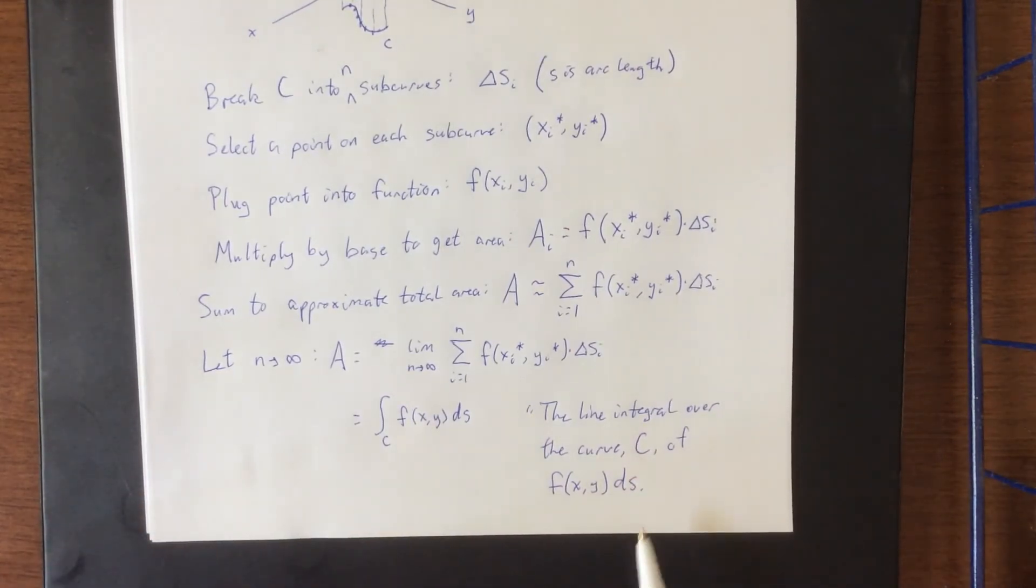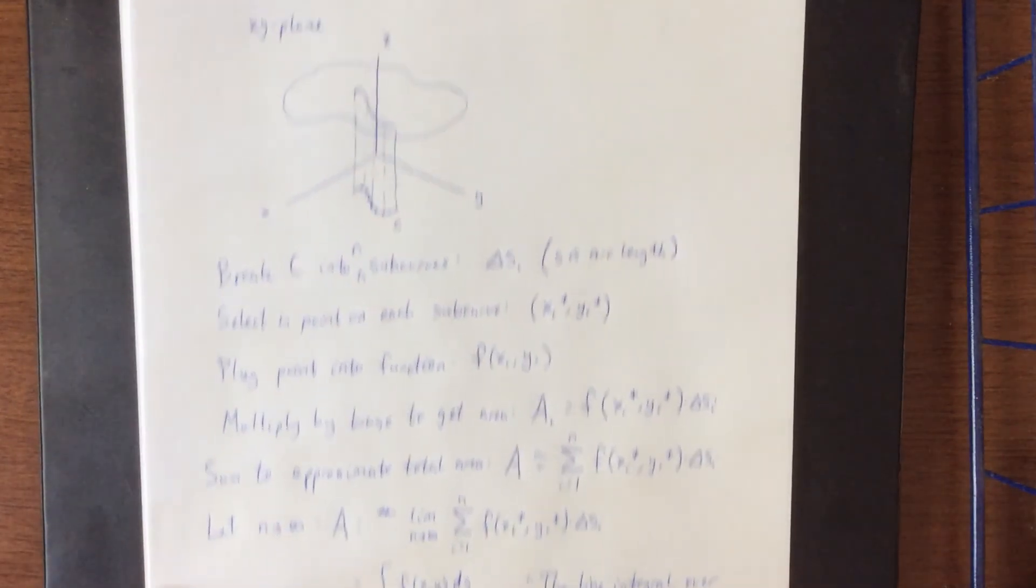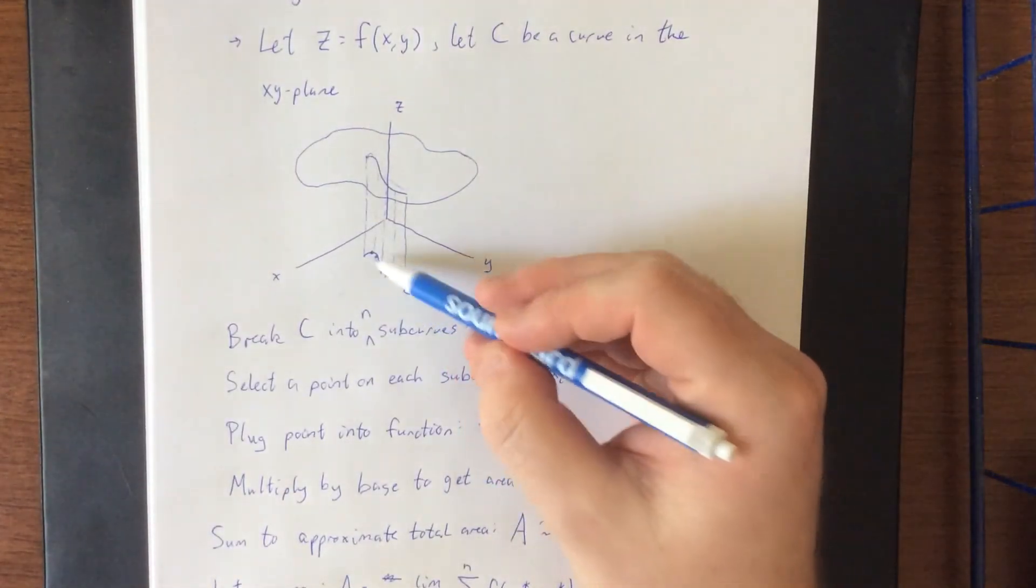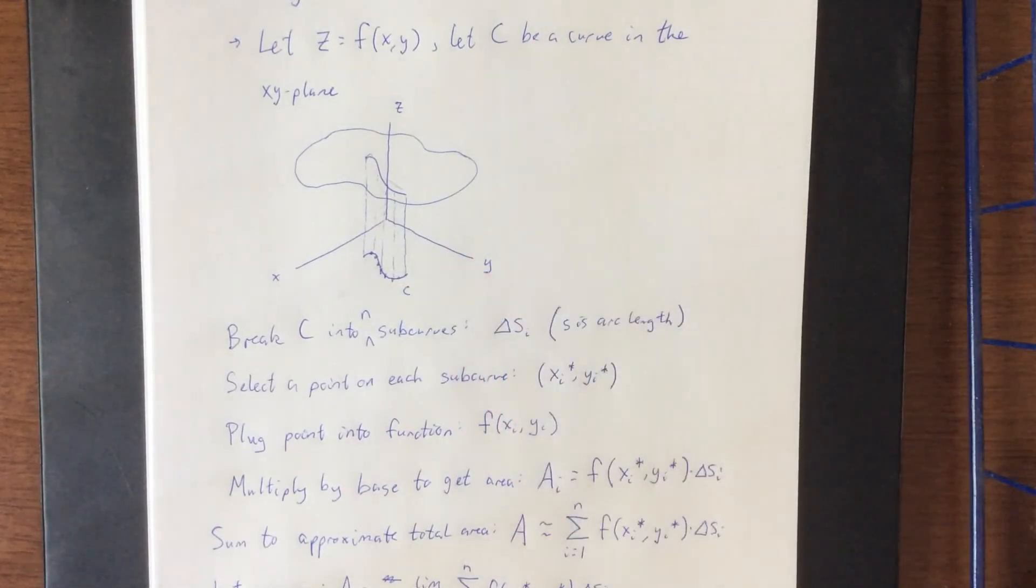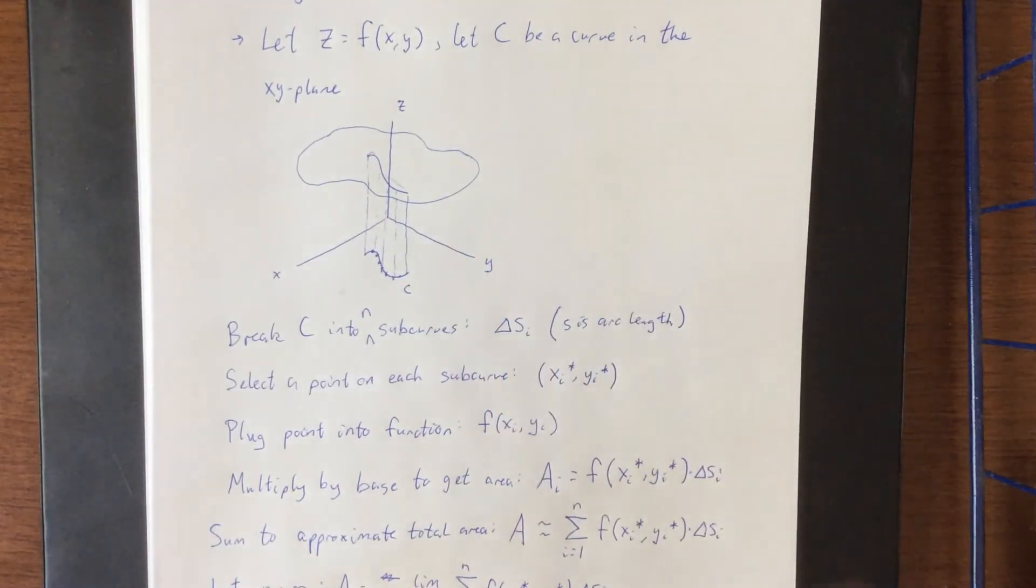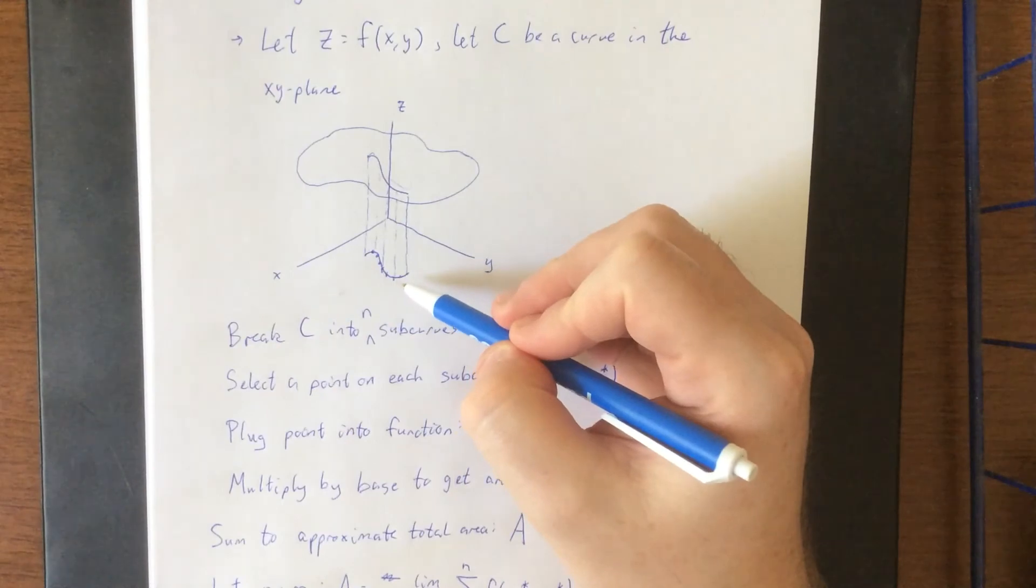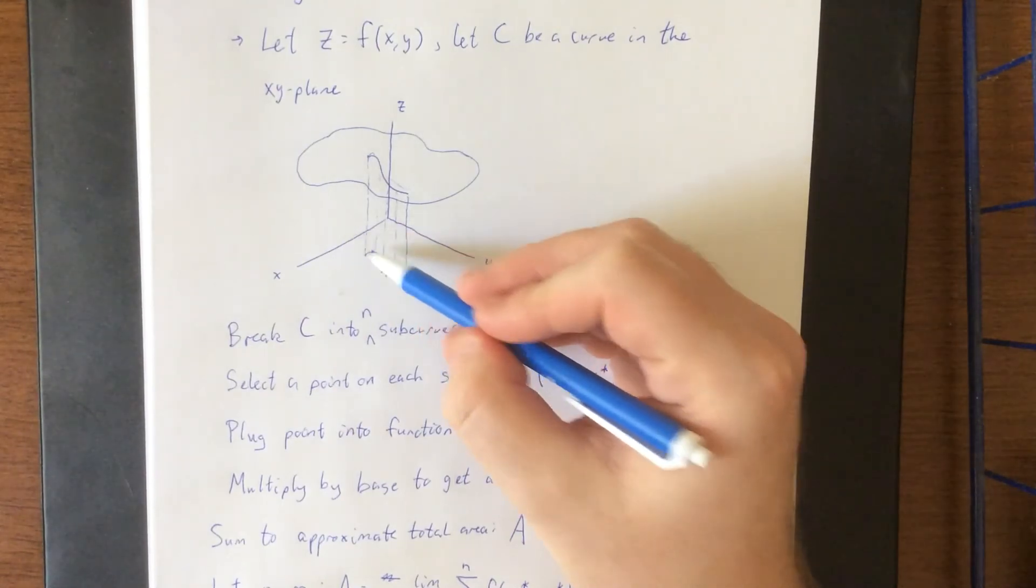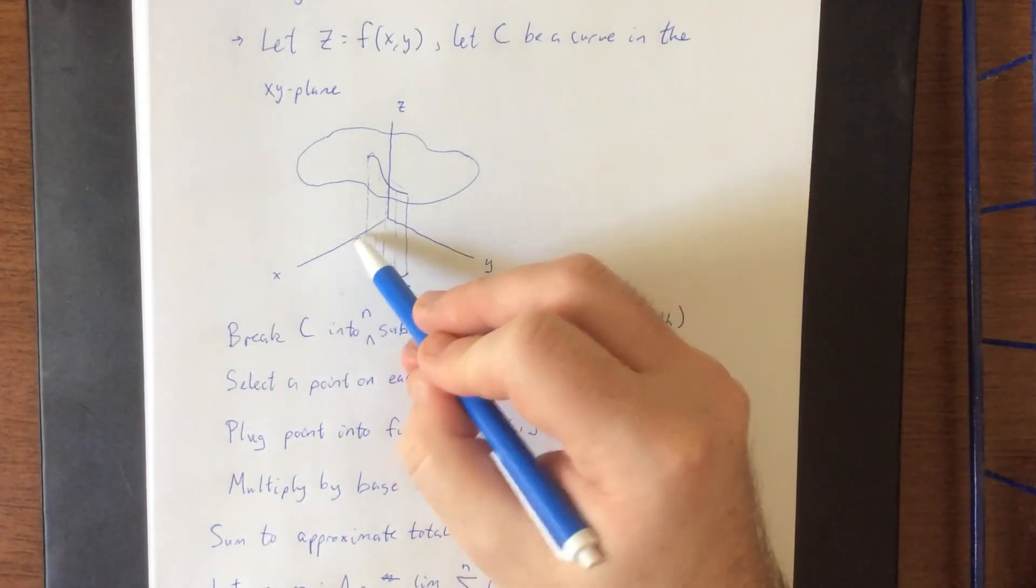Now the differential that you have at the end of your line integral is going to be really important because we're going to see three different kinds of differentials show up in here. Now for a given curve that's just sort of chilling in space like this we would probably use a ds with that. However it's also possible to consider projecting this curve onto the x-axis and instead of using ds we would use dx.